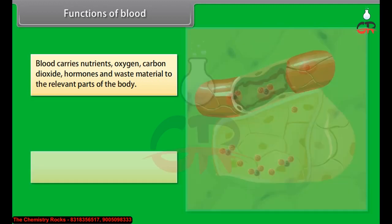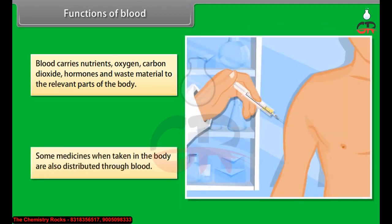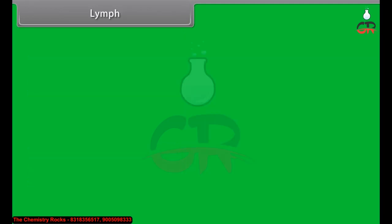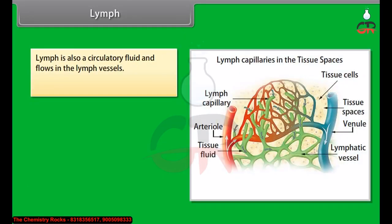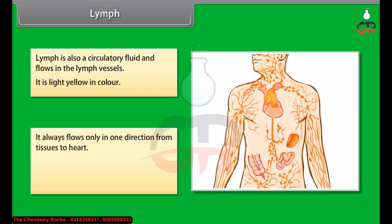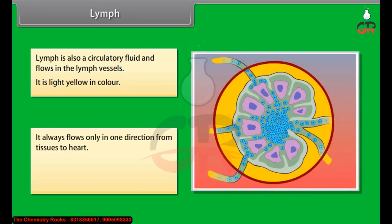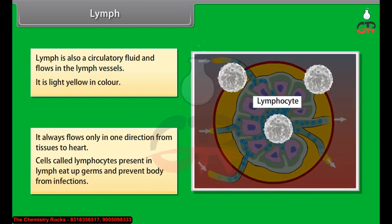Lymph is also a circulatory fluid and flows in the lymph vessels. It is light yellow in color and always flows in one direction — from tissues to the heart. Cells called lymphocytes present in lymph engulf germs and prevent the body from infections. Lymph also carries digested fats from the intestine to other parts, and returns proteins and fluid from circulation to tissues.